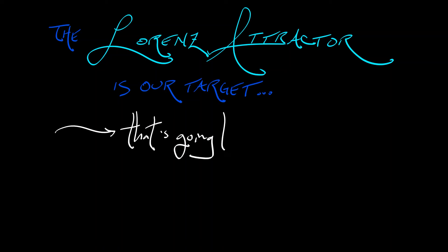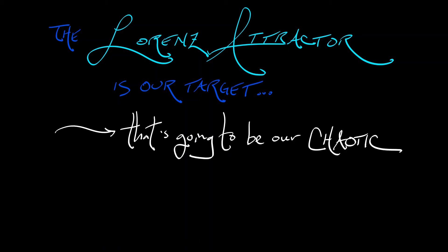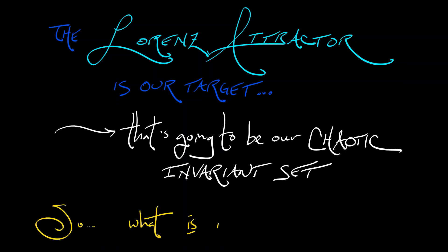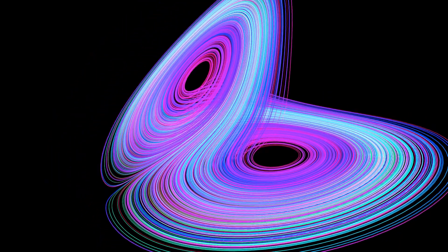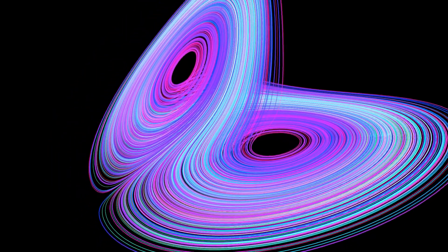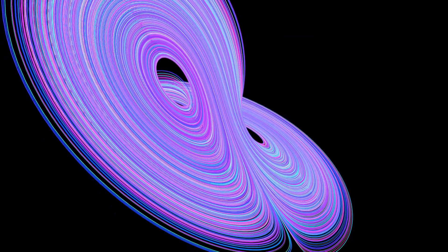That is going to be our chaotic invariant set about which we want to prove that the definitions of chaos hold. What is that attractor? We should go back and examine the things that we saw when we did a simulation. Lorentz originally noticed — everyone notices — that it seems as though everything is accumulating onto a two-dimensional surface, but it's not quite a normal surface. It's kind of unusual, kind of weird. How do we make sense of that? How do we turn that into something that we can prove theorems about?